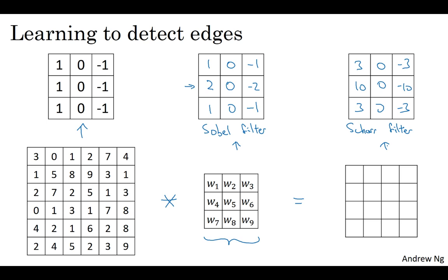Rather than just vertical and horizontal edges, maybe you can learn to detect edges that are at 45 degrees, or 70 degrees, or 73 degrees, or whatever orientation it chooses.